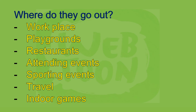Where do they go out? Examples include: playground, restaurant, attending events, sporting events, and travel. For indoor games, maybe they play in the park. Maybe they went to the stadium. For travel, they might go to Kuala Lumpur, go to the island, or visit beautiful places. Sporting events means places where sports activities are held.